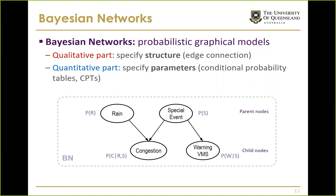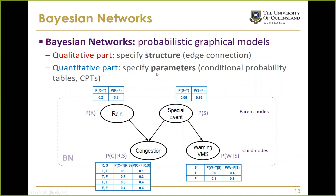There are essentially two components in building a Bayesian network: the qualitative part, which is specifying the structure — whether there will be edges and how nodes are connected — and the quantitative part, which is specifying parameters, also called conditional probability tables for each variable. Root nodes require marginal distributions, while child nodes require conditional distribution tables.